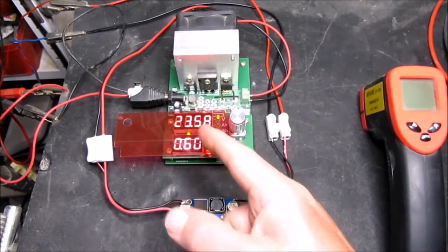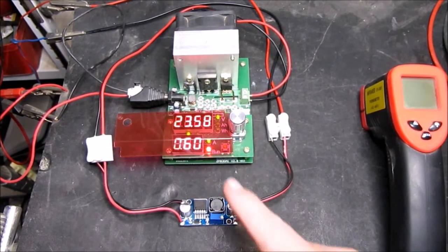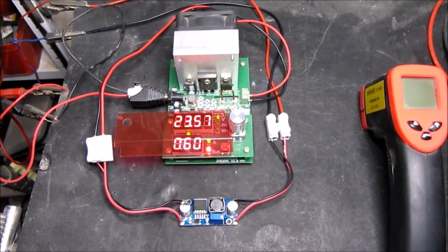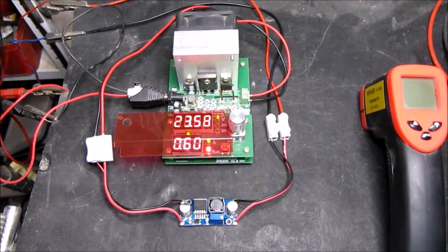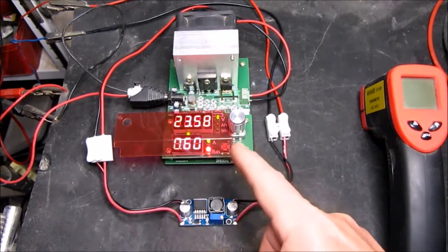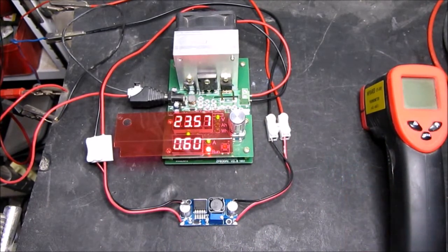Here we have the module set to 24 volts with no load. The load has gone down to 0.6 of an amp and this is stable now - it's been on for over an hour. Let's see what temperature... by the way, 23.6 times 0.6 comes to a little over 14 watts.